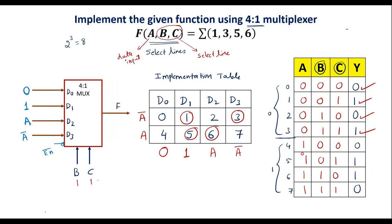This is how we can implement any given Boolean function using a 4-to-1 multiplexer. Thank you for watching.